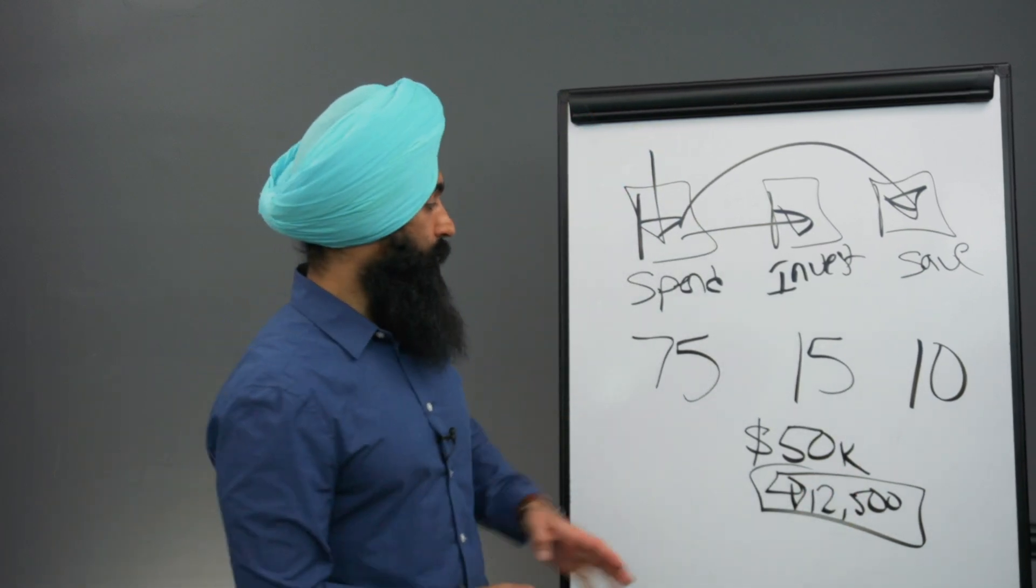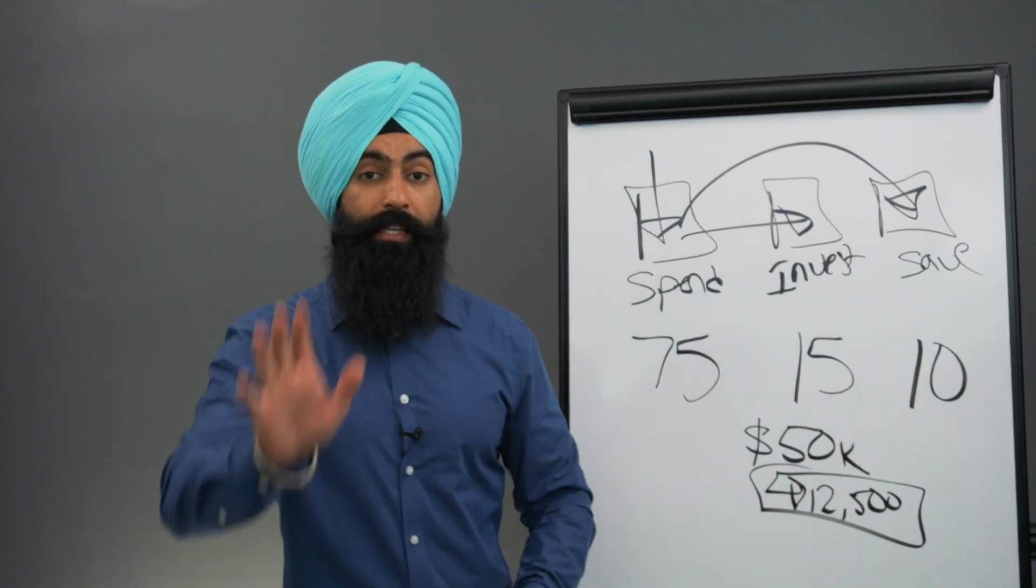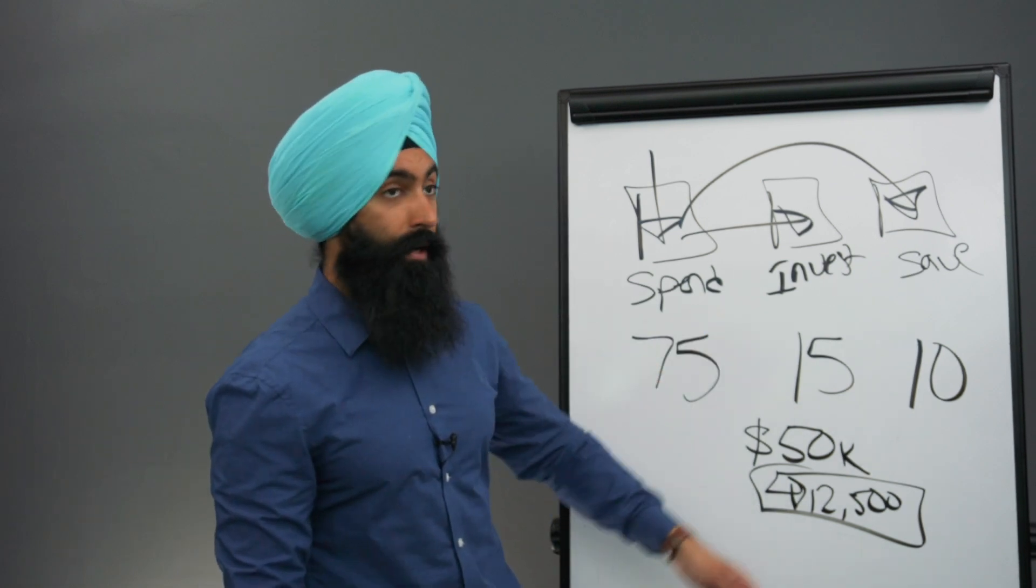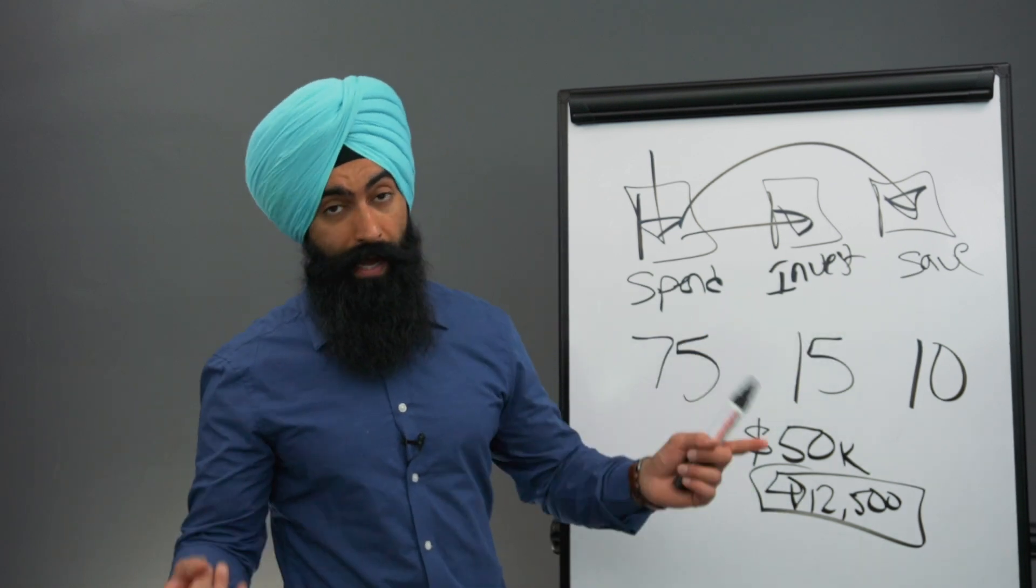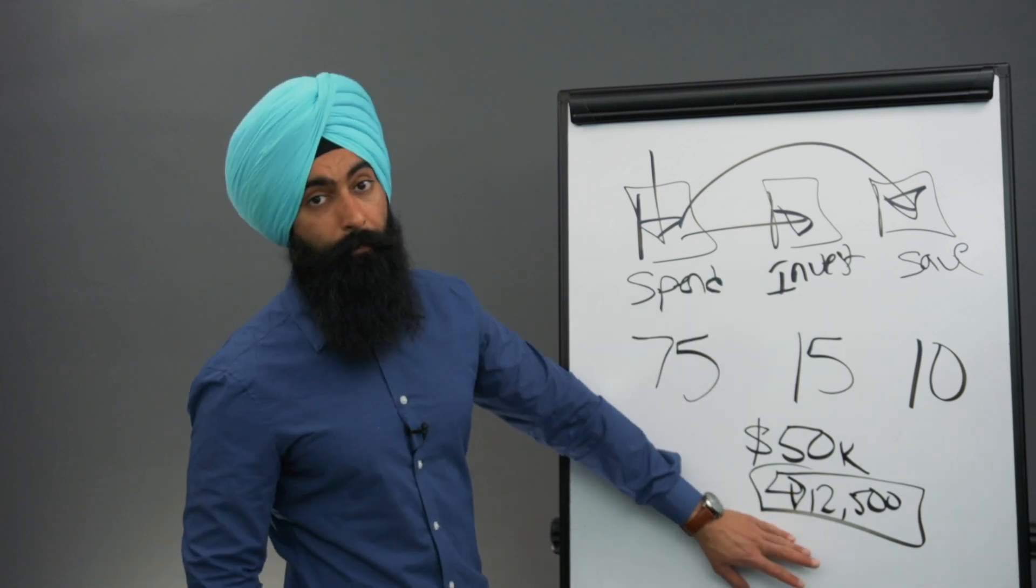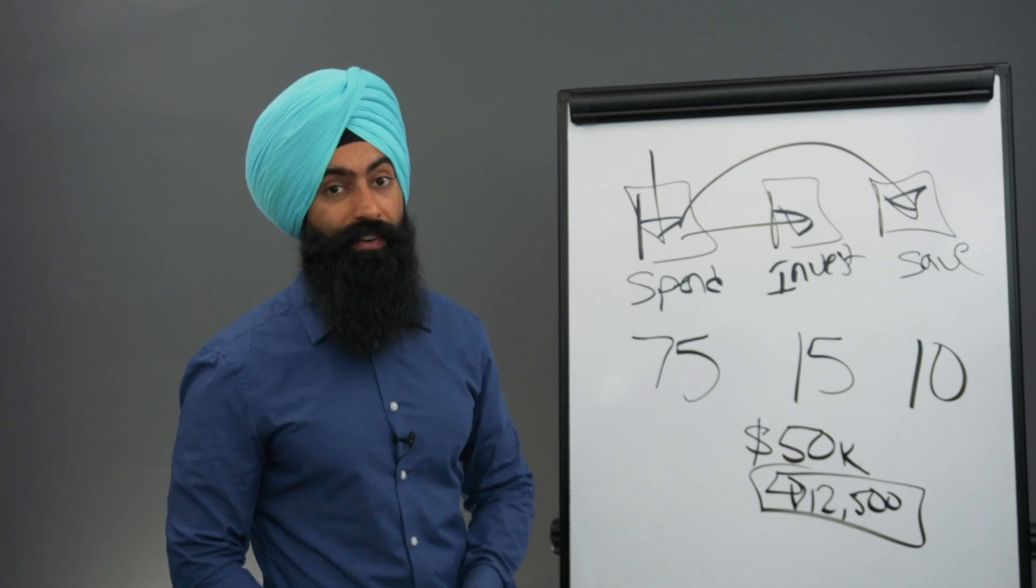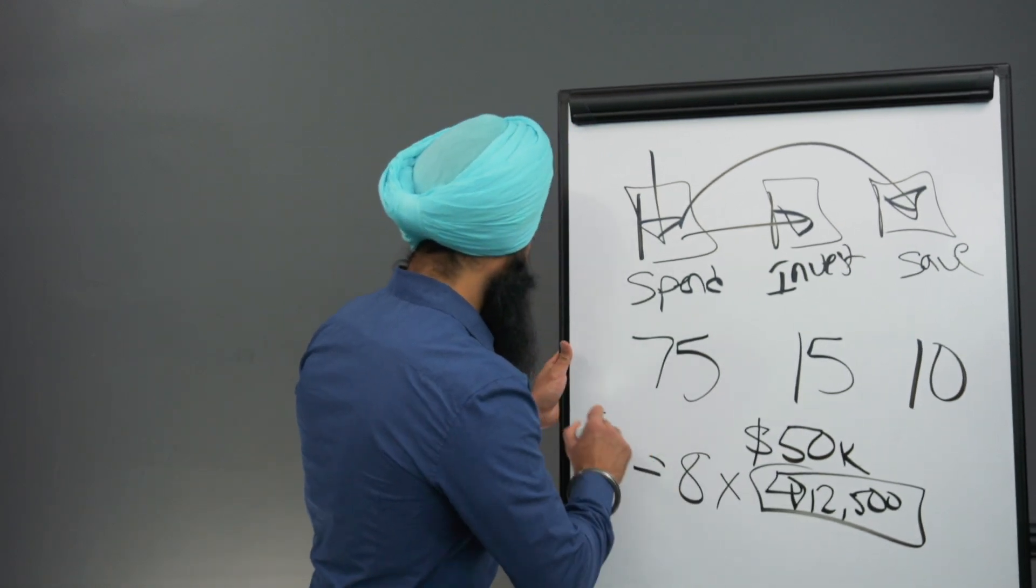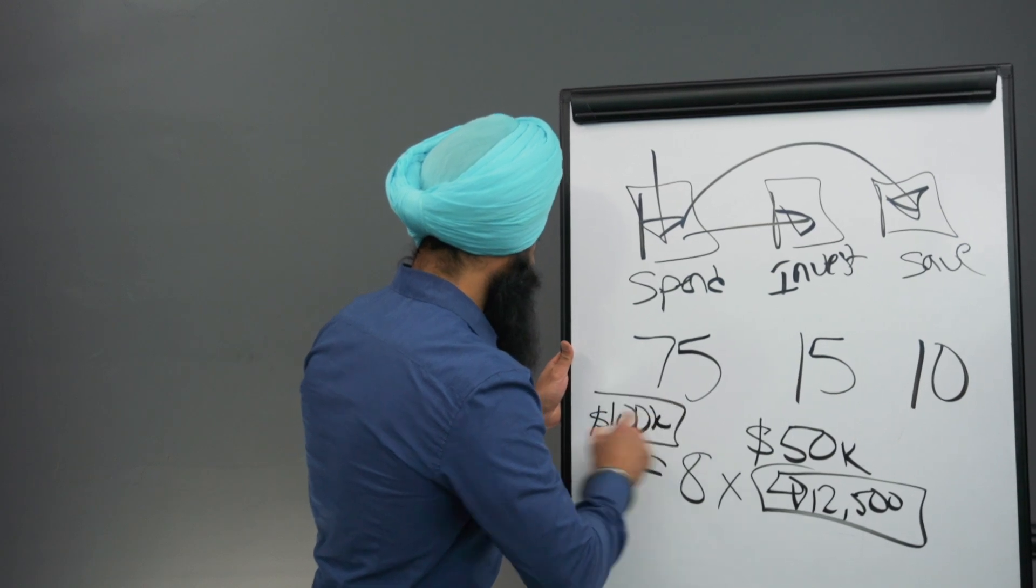At this rate, if you put aside 25% of your income, assuming you don't get a pay raise, because if you get a pay raise, you're going to be investing more money and saving more money, because now when you get a pay raise, your investments also get a pay raise. But if you don't get a pay raise, and now you're putting aside 25% of your income, well, it's going to take you eight years to have that $100,000 put aside.